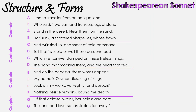On the other hand, we have a Shakespearean sonnet, sometimes called an English sonnet. It is characterised by three quatrains — a quatrain being a four-line section — finished off with a rhyming couplet, which is a two-line rhyme. The rhyme scheme of a Shakespearean sonnet is typically A-B-A-B, C-D-C-D, E-F-E-F, G-G.